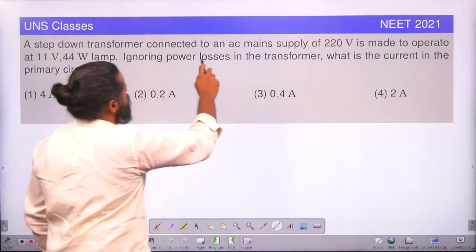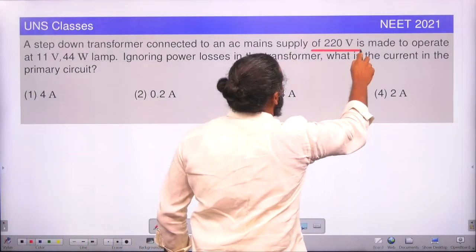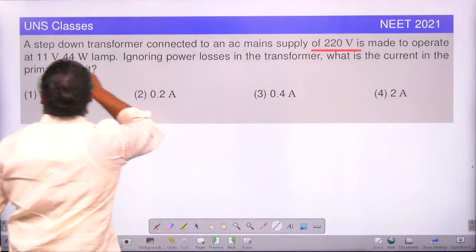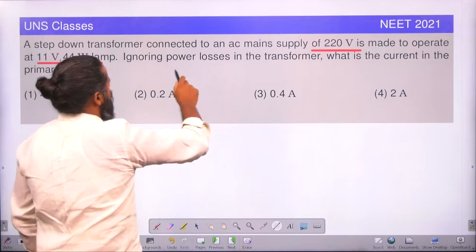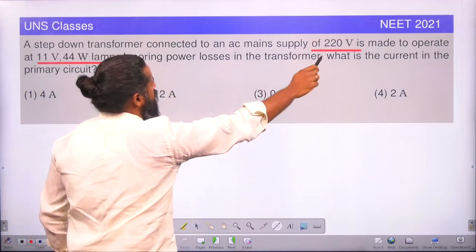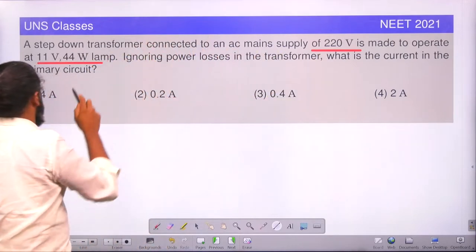A step-down transformer connected to an AC main supply of 220 volt is made to operate at 11 volt 44 watt lamp. Ignoring power losses in the transformer, what is the current in the primary circuit?